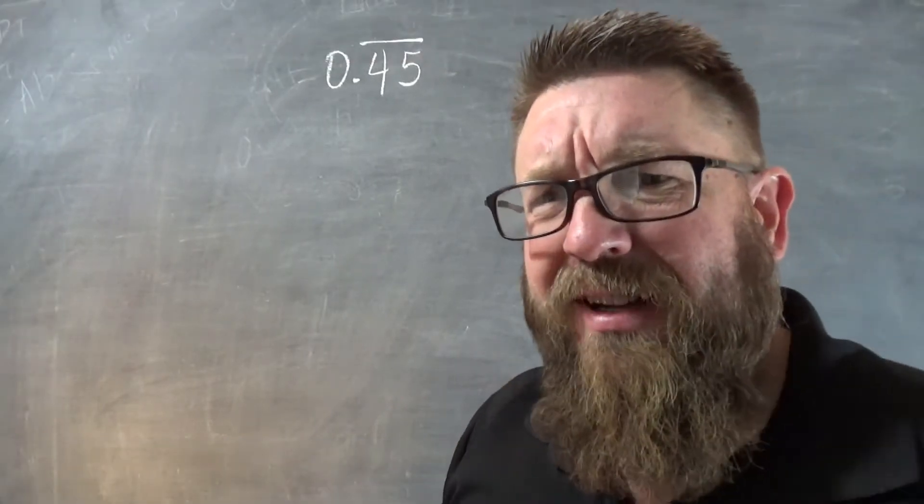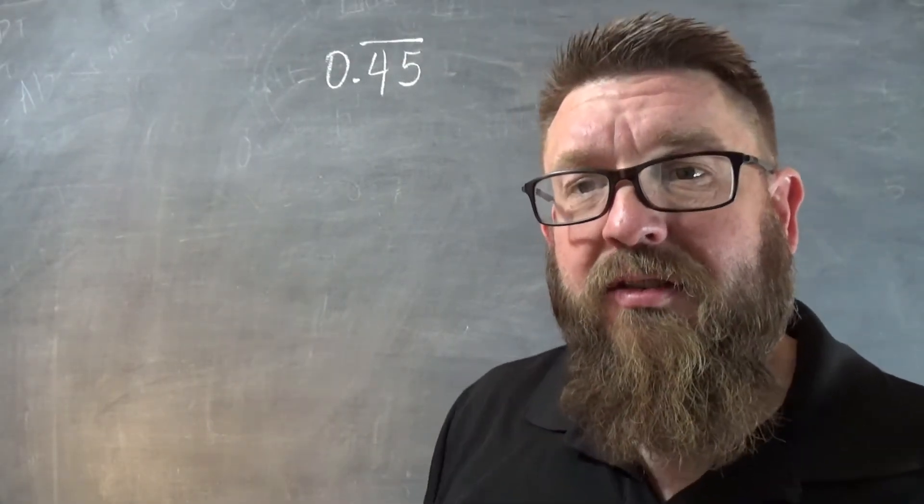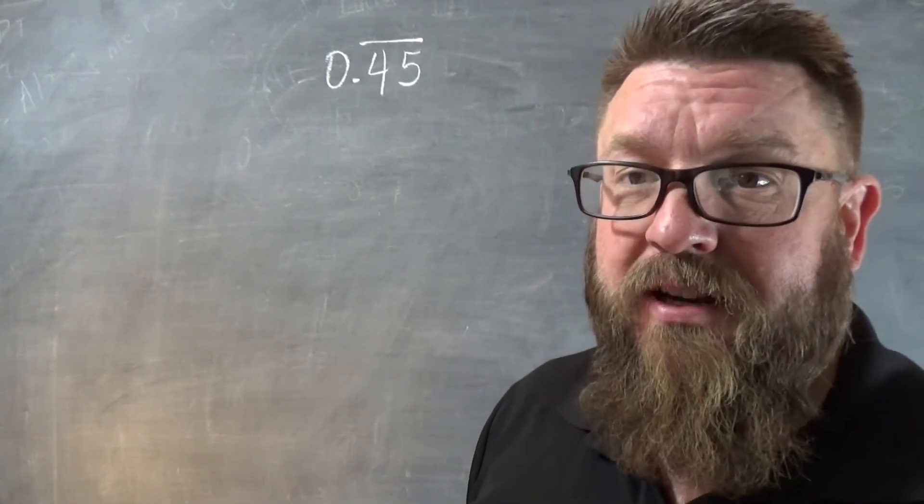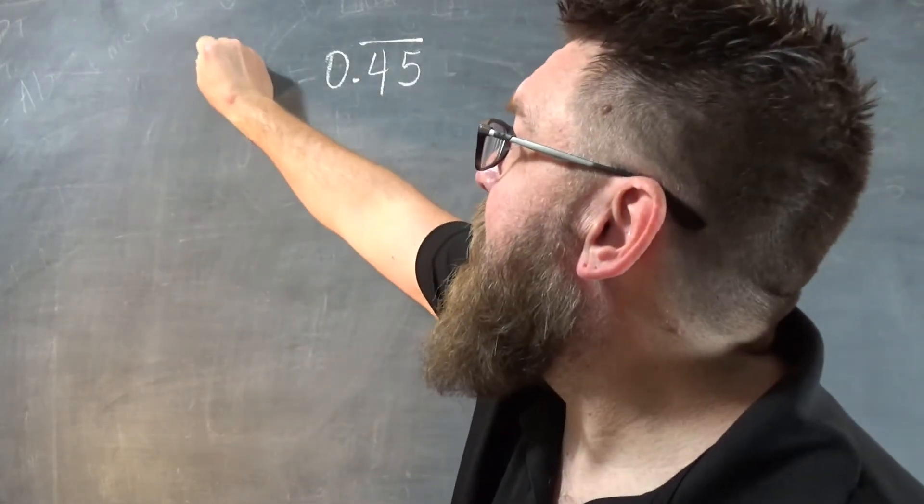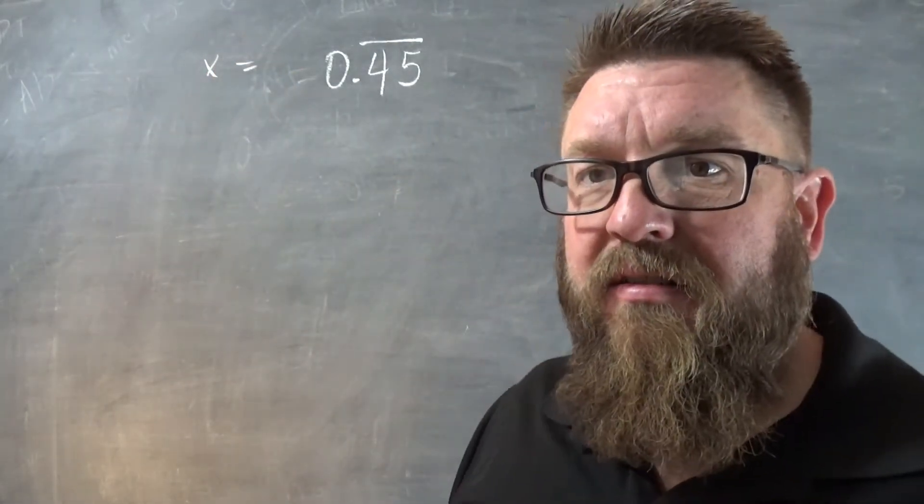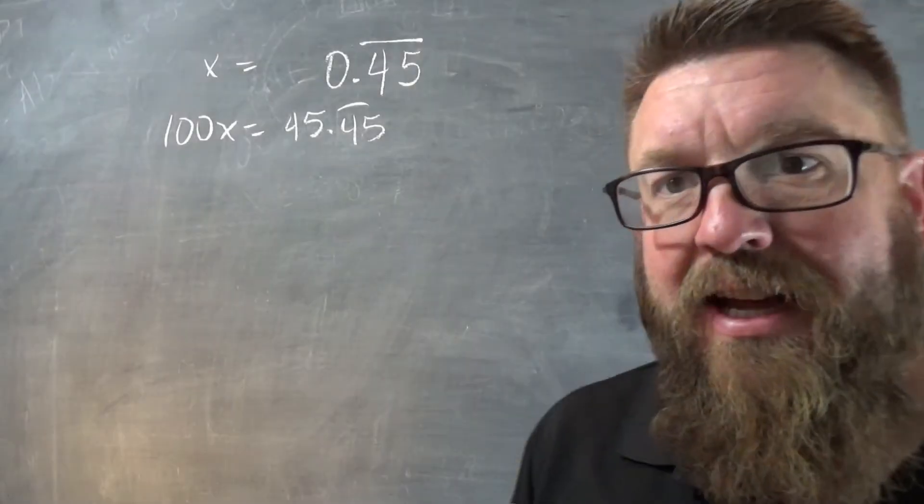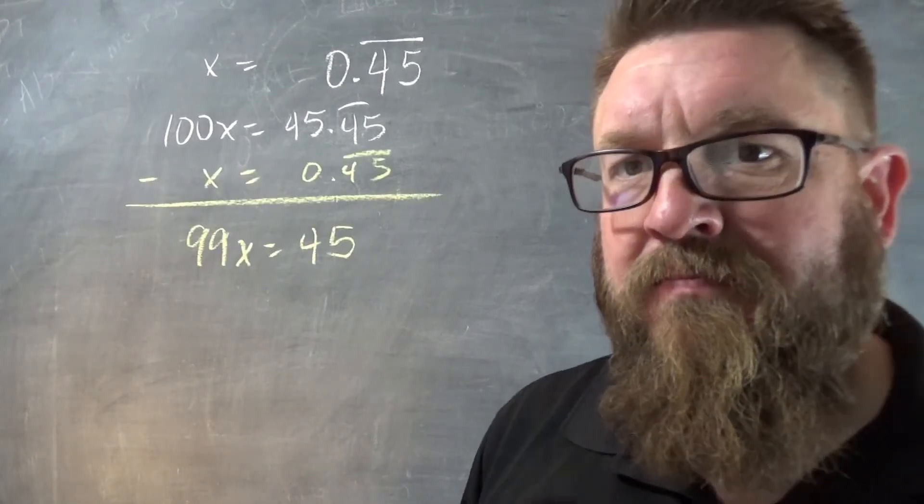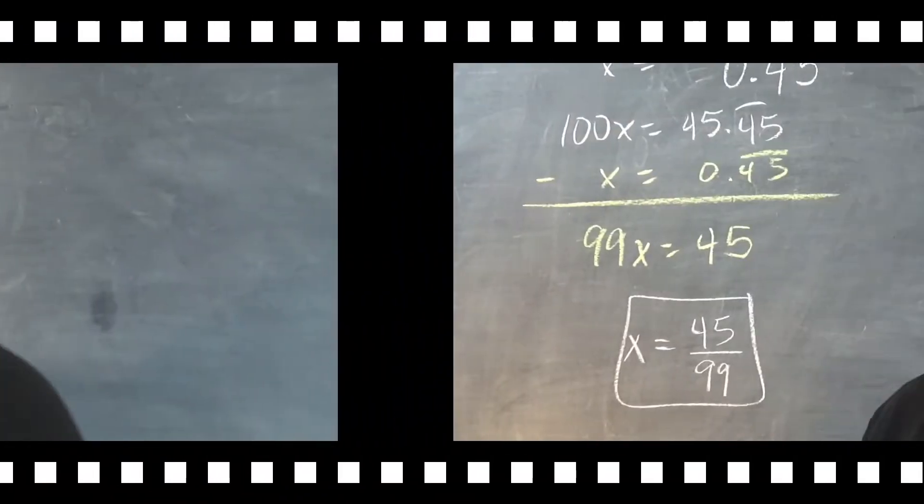Now, what if you had one that wasn't quite so pretty as the last one? 0.45. Well, you see how this is repeating after the hundredths place. So we're going to actually set up our equation. We don't know what that is as a fraction, so that's x. And then you see that's the hundredths place again, so we're going to multiply both sides by 100. Just like that. Now, just like before, we take our first equation and subtract that from the second equation. There we go. Now, just divide. Done.